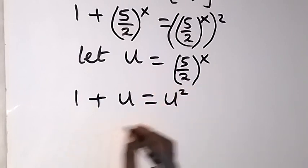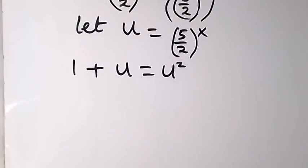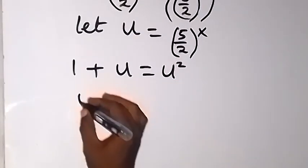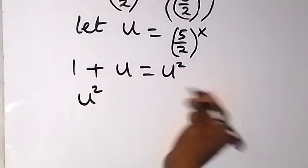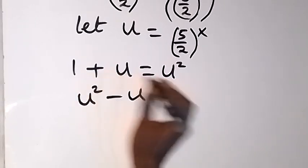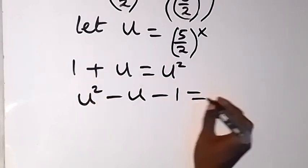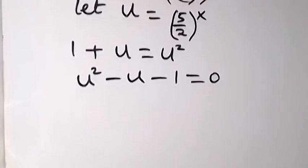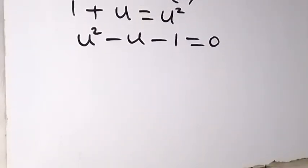When we use this to form a quadratic equation, we can say this is u squared — take this term to the other side — minus u, then minus 1, equals 0. So this has formed a quadratic equation in which we can solve for u.